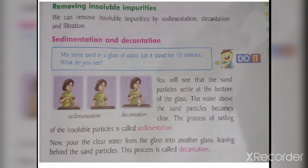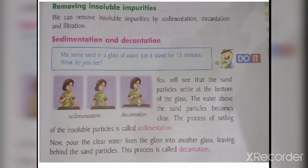You will see that the sand particles settle at the bottom of the glass and the water above the sand particles becomes clear. The process of settling of insoluble particles at the bottom is known as sedimentation. Pouring the clear water into another glass — removing it from the other glass — is known as decantation. I hope you all have understood these processes.